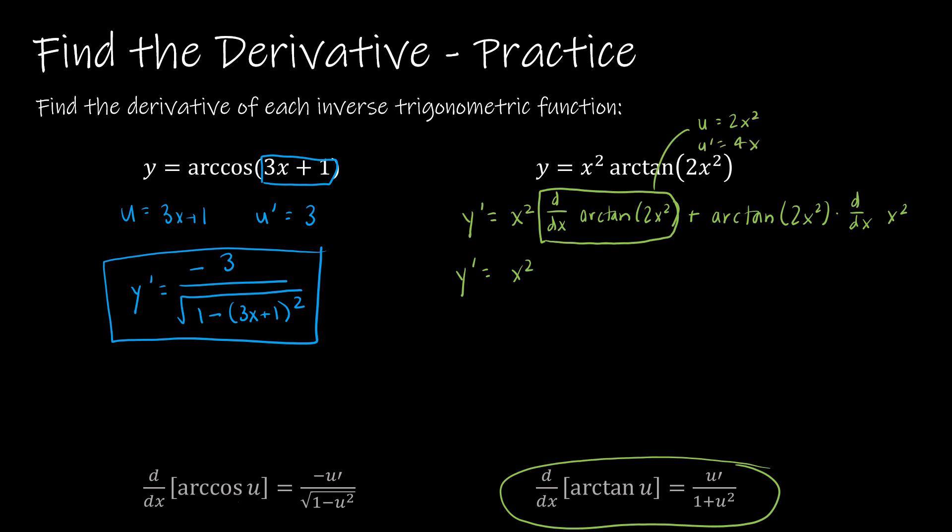So that's going to give me u prime, which is 4x, divided by 1 plus u squared. u squared is 2x squared squared. Now, if you want to go ahead and write that as 4x to the fourth, you sure can. Again, I'm not going to at this point. Next, I've got arctangent of 2x squared multiplied by the derivative of x squared, which is 2x.